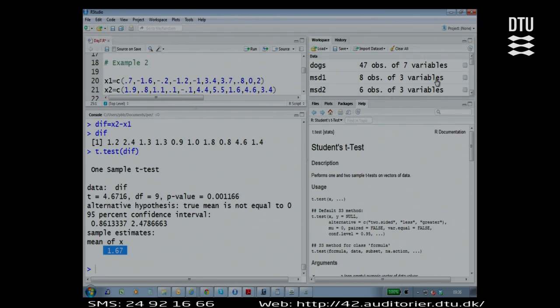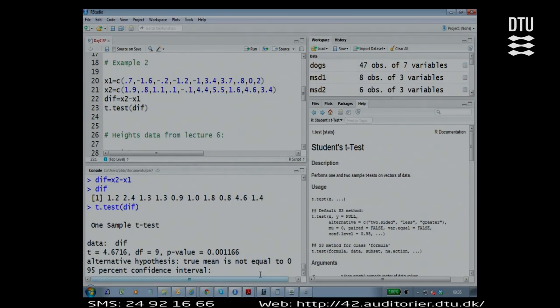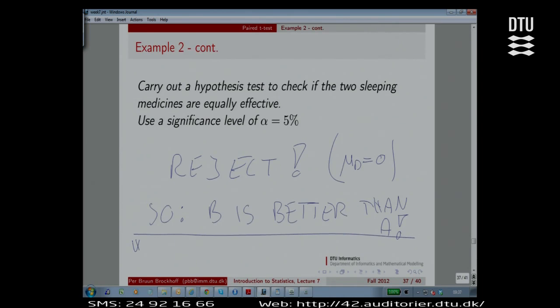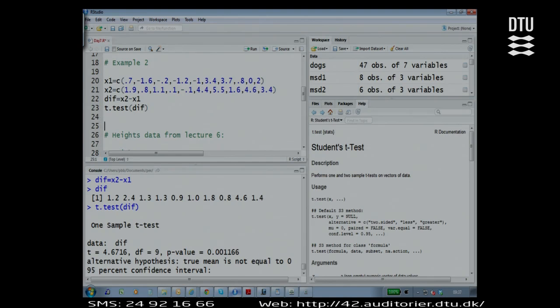Now, can you see what happened here? I'm going to do a wrong analysis. I'm going to do the wrong analysis where I think of these data as if they came from another experiment where I had 10 persons doing sleeping medicine A and another 10 persons doing sleeping medicine B. I could have done such an experiment. That's a very common experiment out there to perform, because as I said, sometimes that's the only thing that makes practical sense. Let me try to do this analysis. That is a non-paired situation, as if it was non-paired.